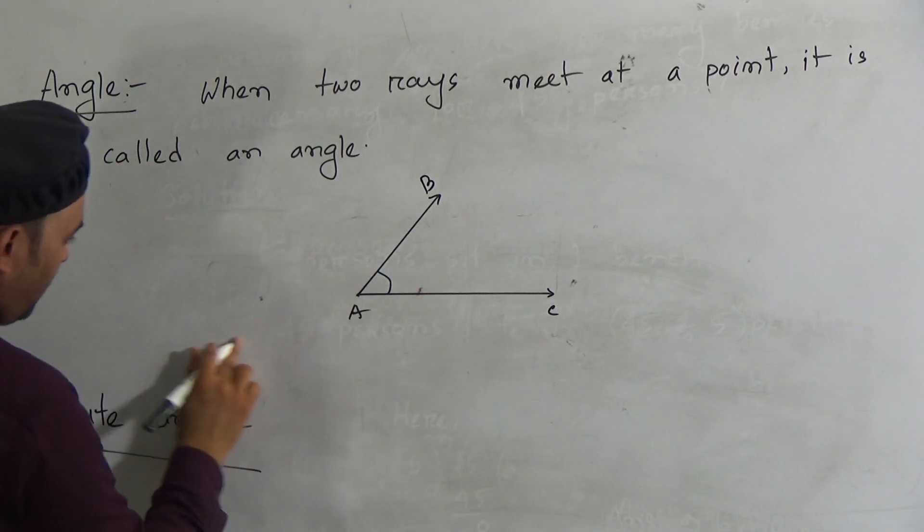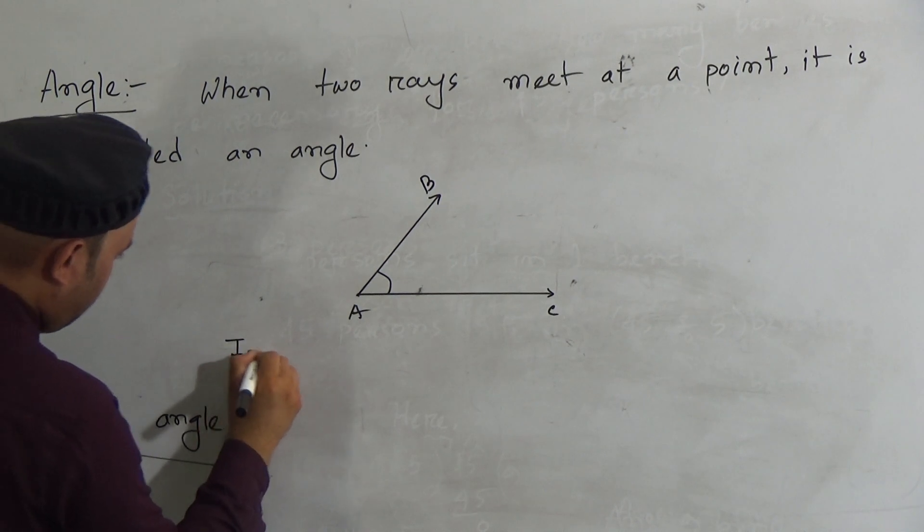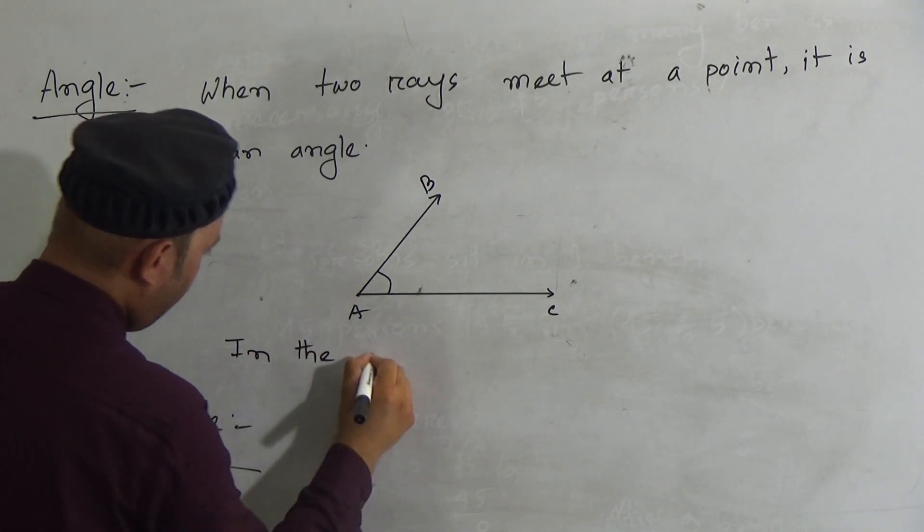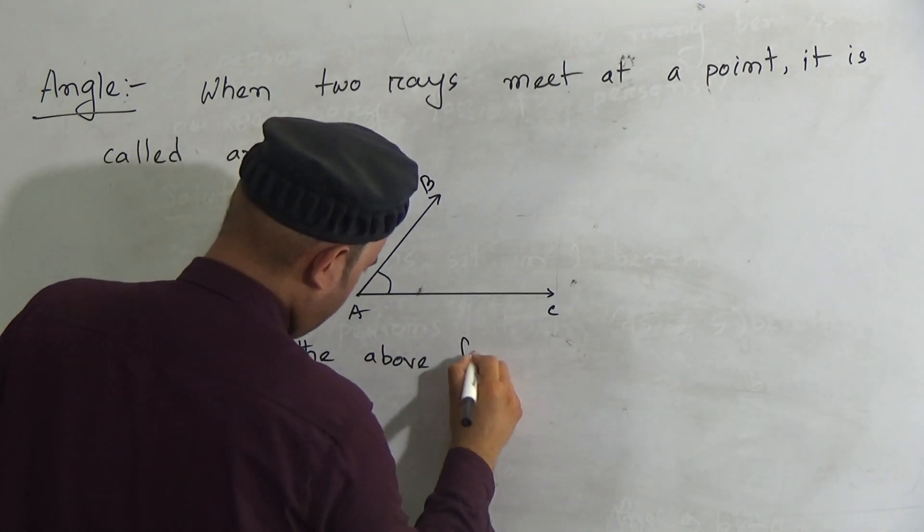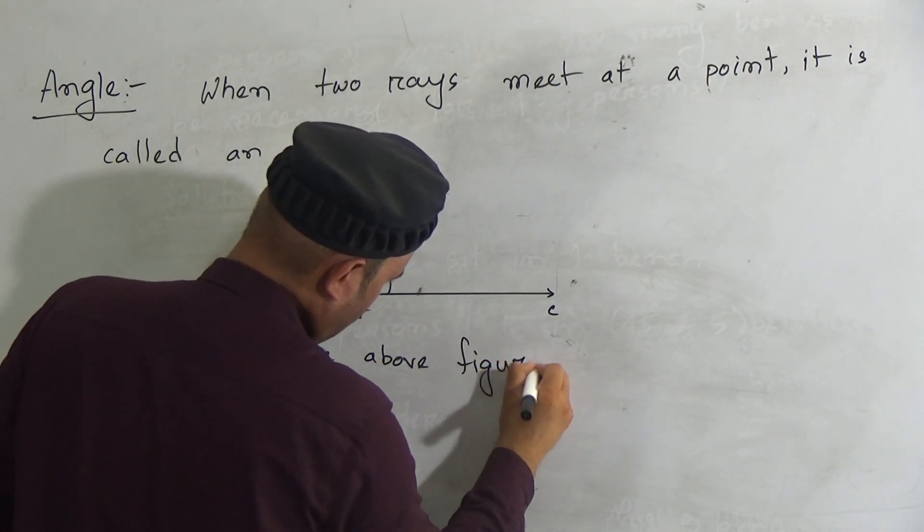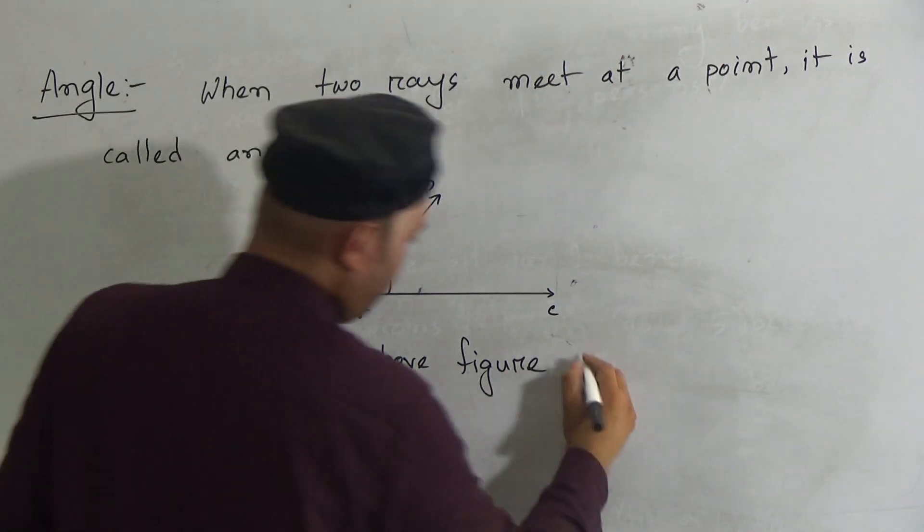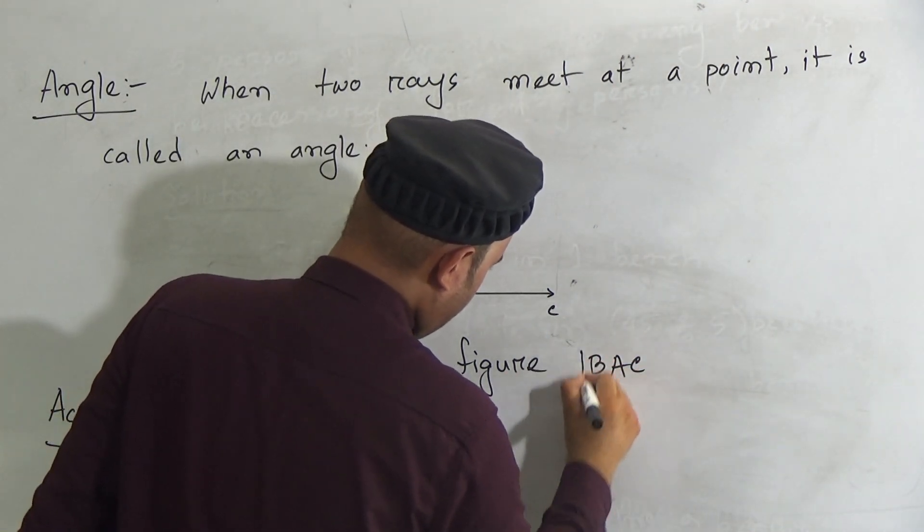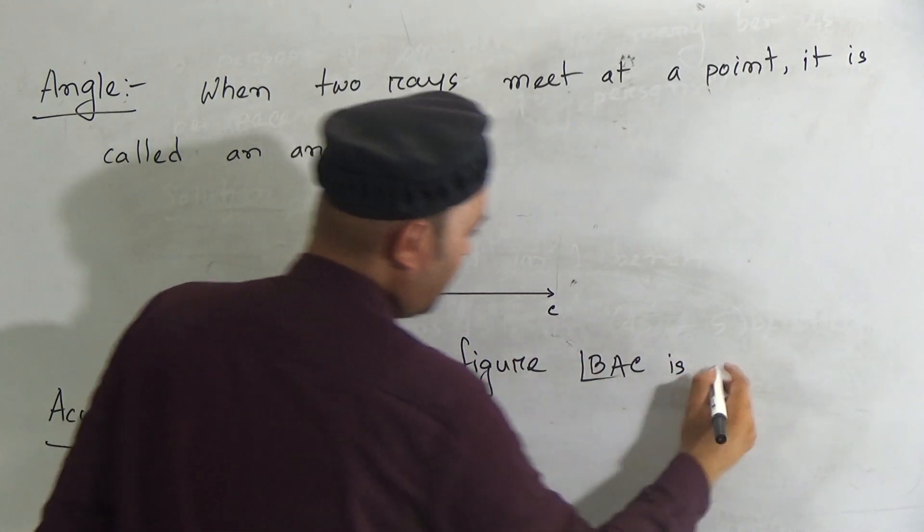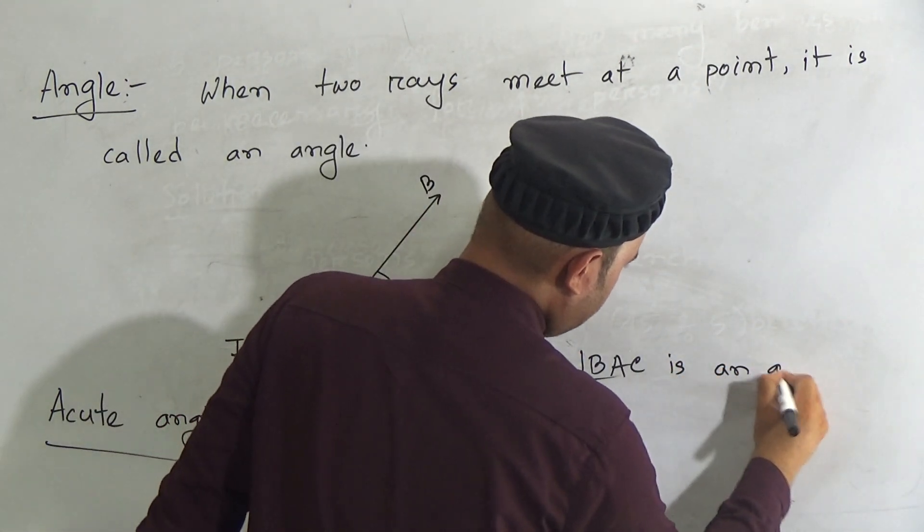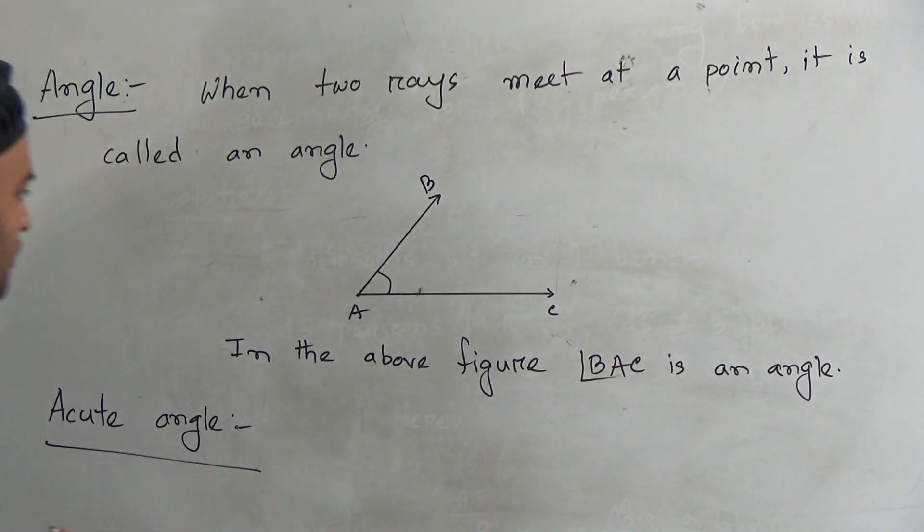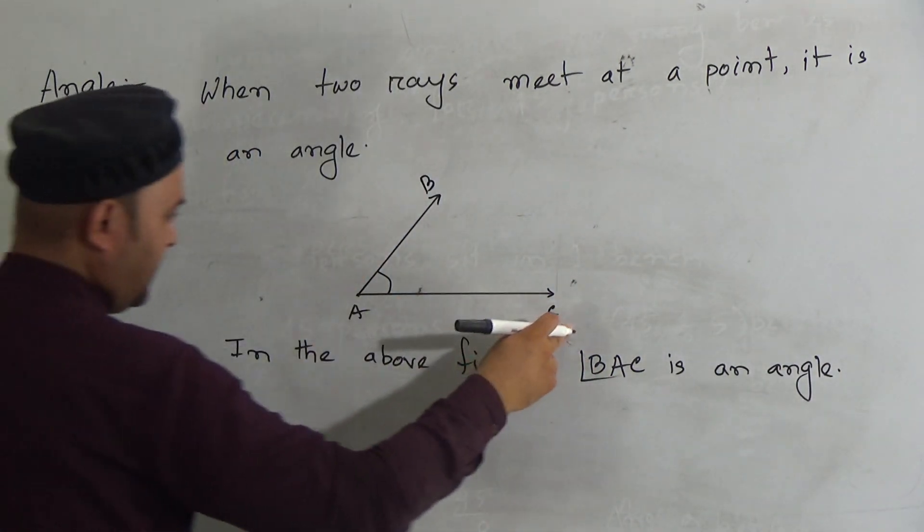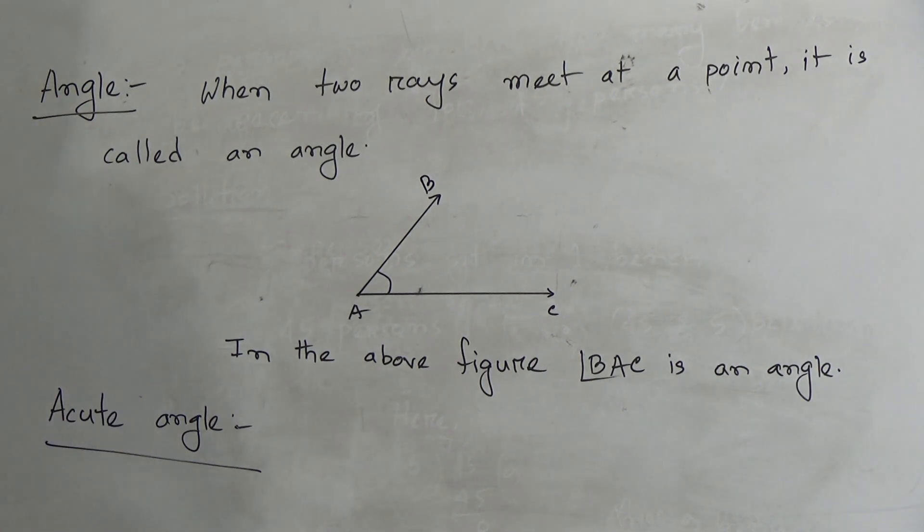Here BAC is an angle. So you have to write: in the above figure, BAC is an angle.